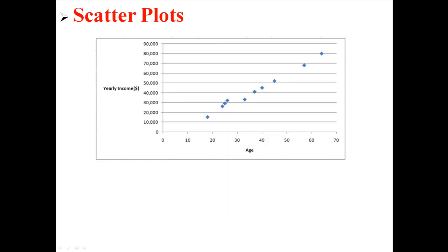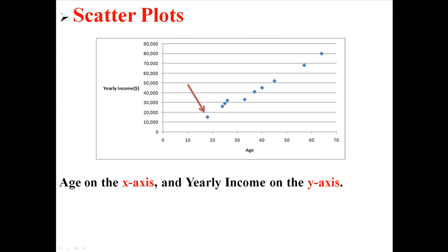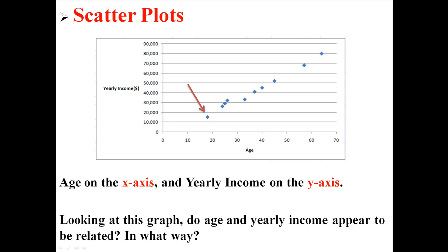We're going to examine that with a scatterplot. On the scatterplot, I have plotted those points where we have age on the x-axis and yearly income on the y-axis. Now looking at this graph, do you think that age and yearly income appear to be related and in what way? You can see that it almost makes a line — if you were to draw a line through that, you would see that as age increases, yearly income also seems to increase.